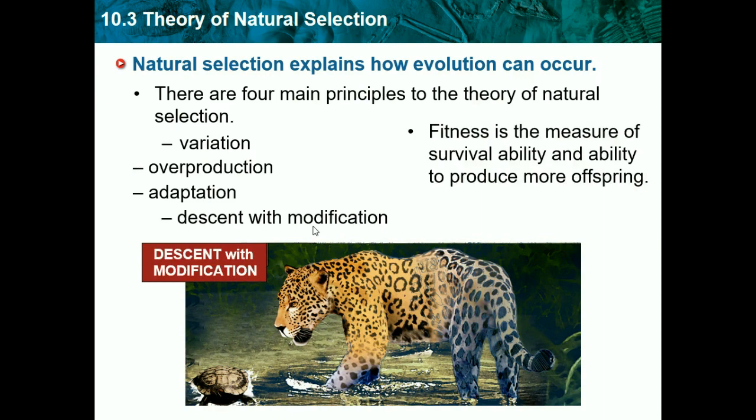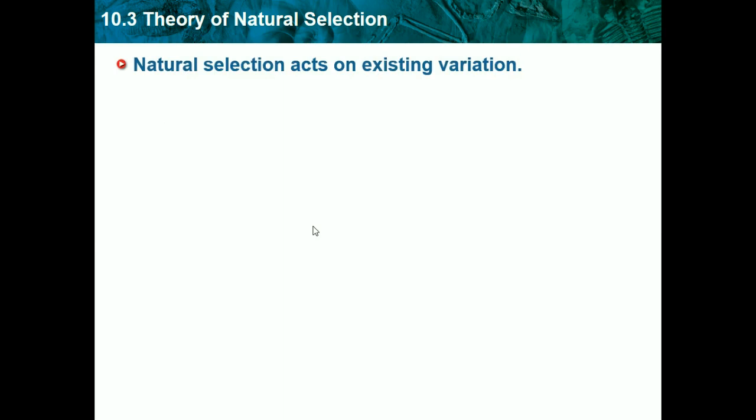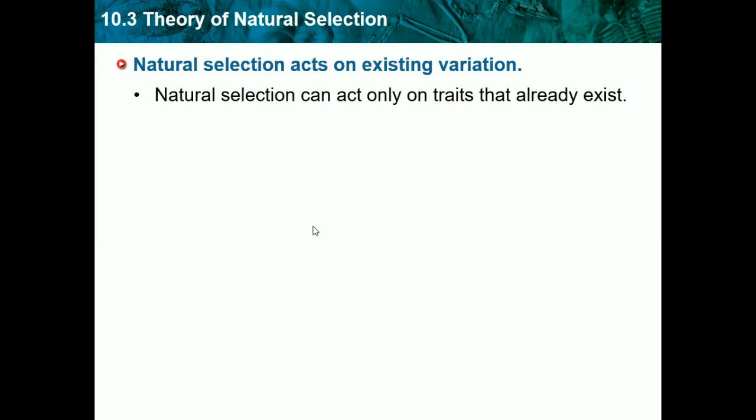Fitness is the measure of survival ability and ability to produce more offspring, showing how successful an animal is. Natural selection acts on existing variation. Natural selection can act only on traits that already exist, because the species can only reproduce based on traits it already has. Natural selection isn't going to randomly produce a trait — it only works on the traits already there, because it has to do with how animals mate based on what traits they have.